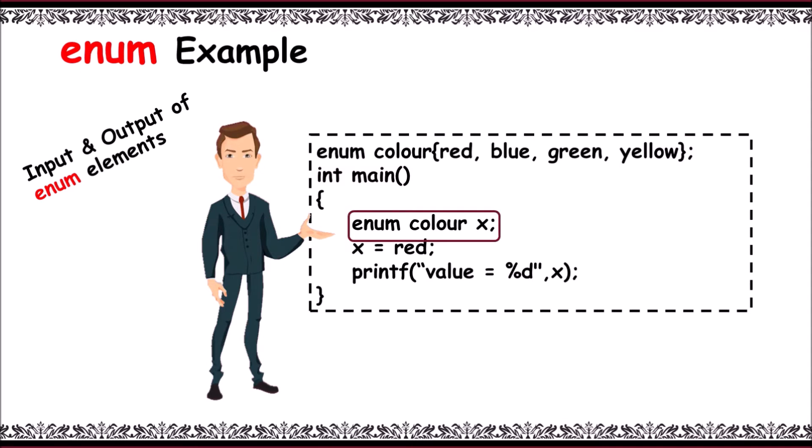Output would be like value is equal to 0, as red belongs to state 0.